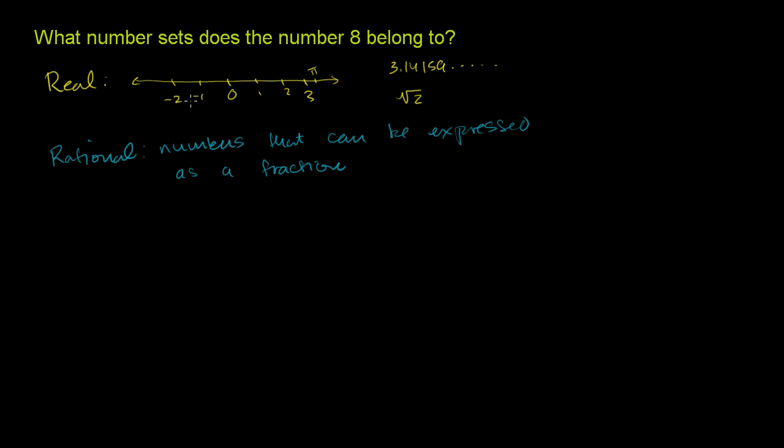So for example, negative 1 is a rational number, because negative 1 could be written as negative 1 over 1. 0 is a rational number. It can be expressed as 0 over anything. It could be 0 over 10. 2 is a rational number. 1 half is a rational number. All of these are rational numbers.